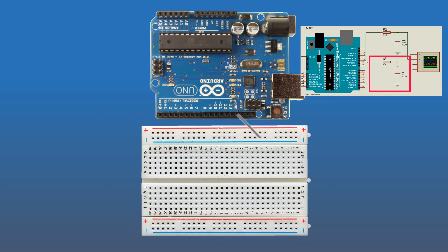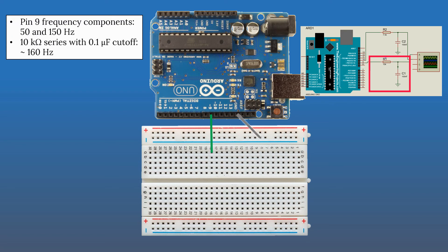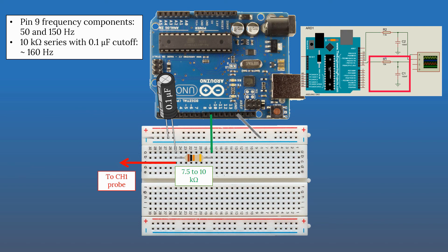We'll connect the Arduino's ground to the breadboard and take the output from pin 9. The signal from pin 9 has frequency components at 50 and 150 Hz. Connecting a 10 kΩ resistor with a 0.1 µF capacitor gives a cutoff frequency of 160 Hz, which is satisfactory. Connect the resistor to pin 9 in series with the 0.1 µF capacitor. If using a polarized capacitor, connect the negative pin to ground. At the node between the resistor and capacitor, connect Channel 1 probe, with Channel 1's ground clip to the negative row.